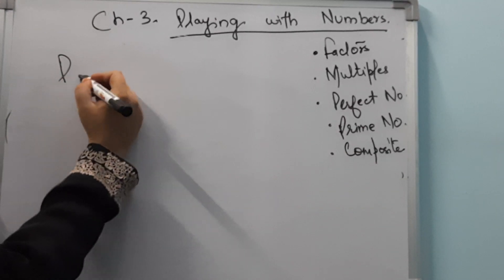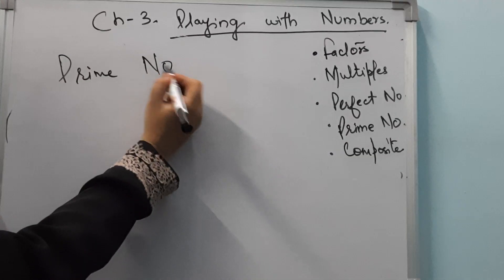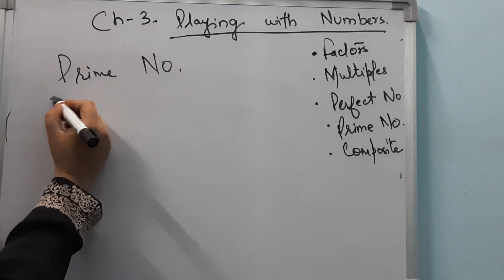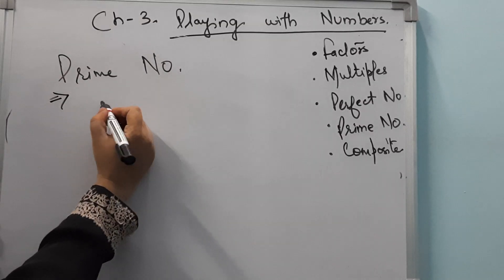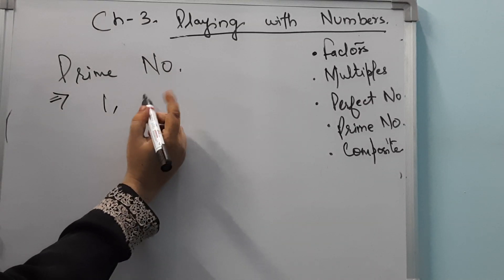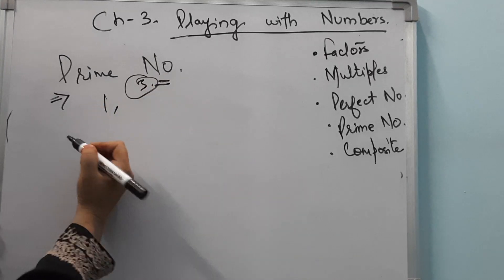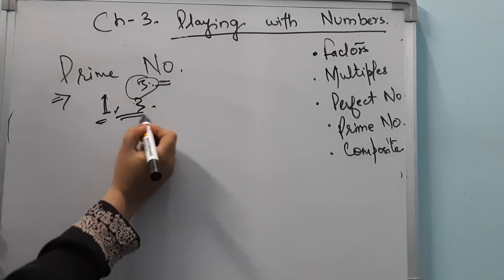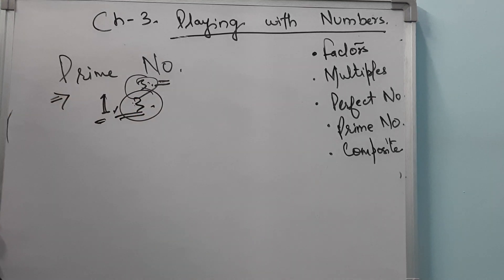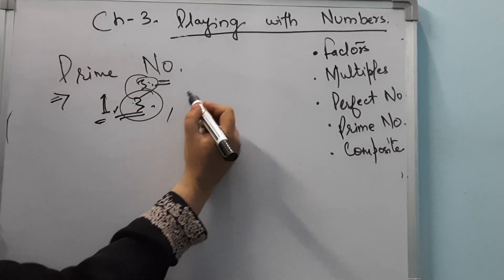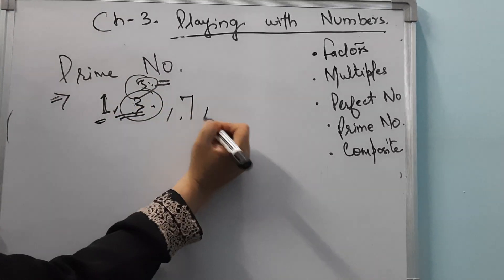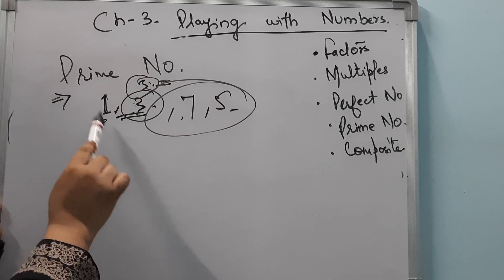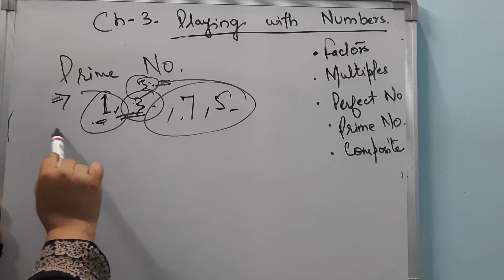Now we will discuss prime numbers. Prime numbers are those numbers which only have factors 1 and the number itself. For example, 3 comes only in the table of 1 and 3 itself, so 3 is a prime number. Numbers like 3, 5, 7 are prime numbers. They don't have any other factors besides 1 and the number itself.